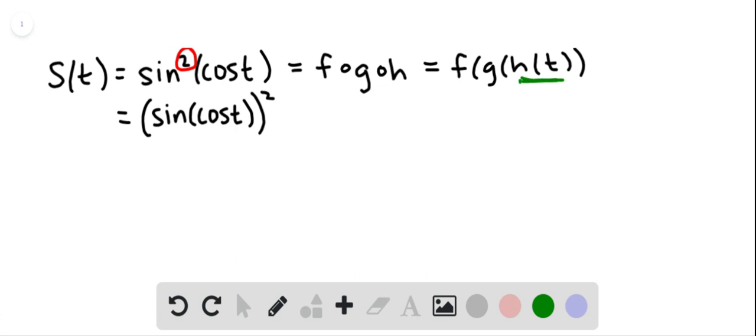So now going back to h of t, that's the innermost function. So if we look at this, the innermost part is the cosine of t. So let's let h of t equal the cosine of t.